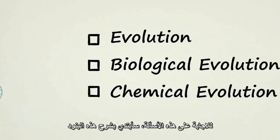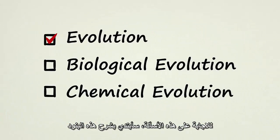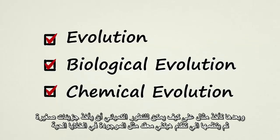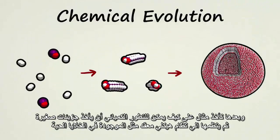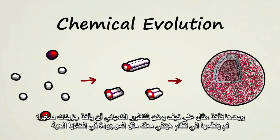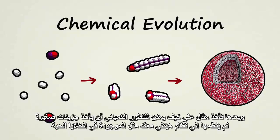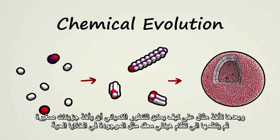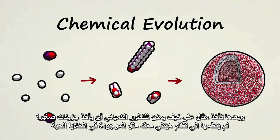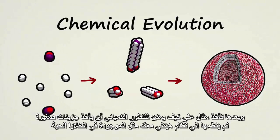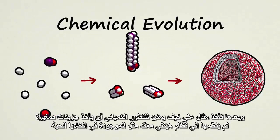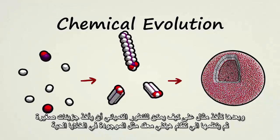To answer these questions, we'll start by first dissecting the terms, and then look at an example of how chemical evolution can take simple molecules and organize them into complex, structured systems similar to those found in living cells.